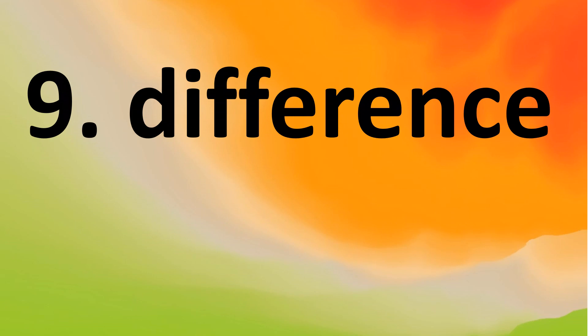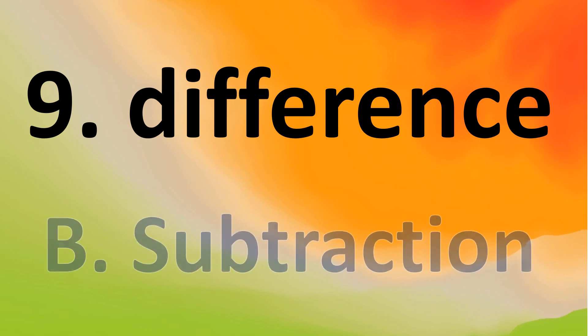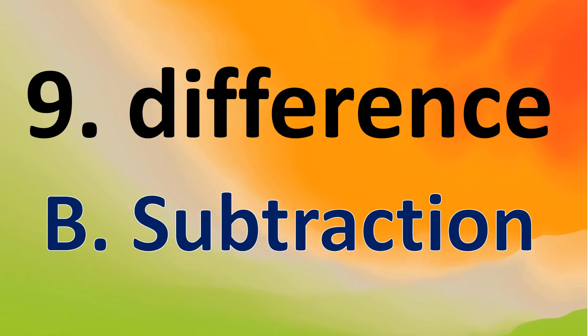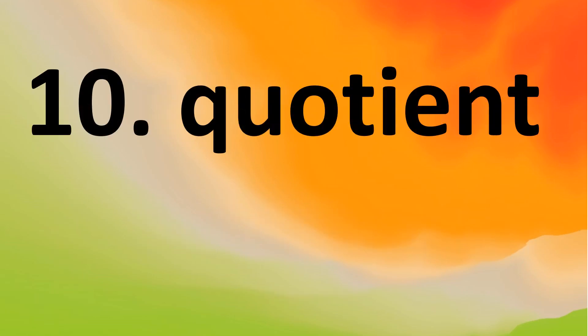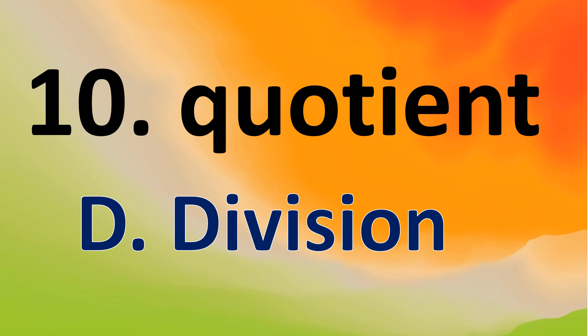Number 9: difference. What operation will it be? Difference — good job! It's letter B, subtraction. For the last number: quotient. What operation? Quotient — fantastic! It's letter D, division.